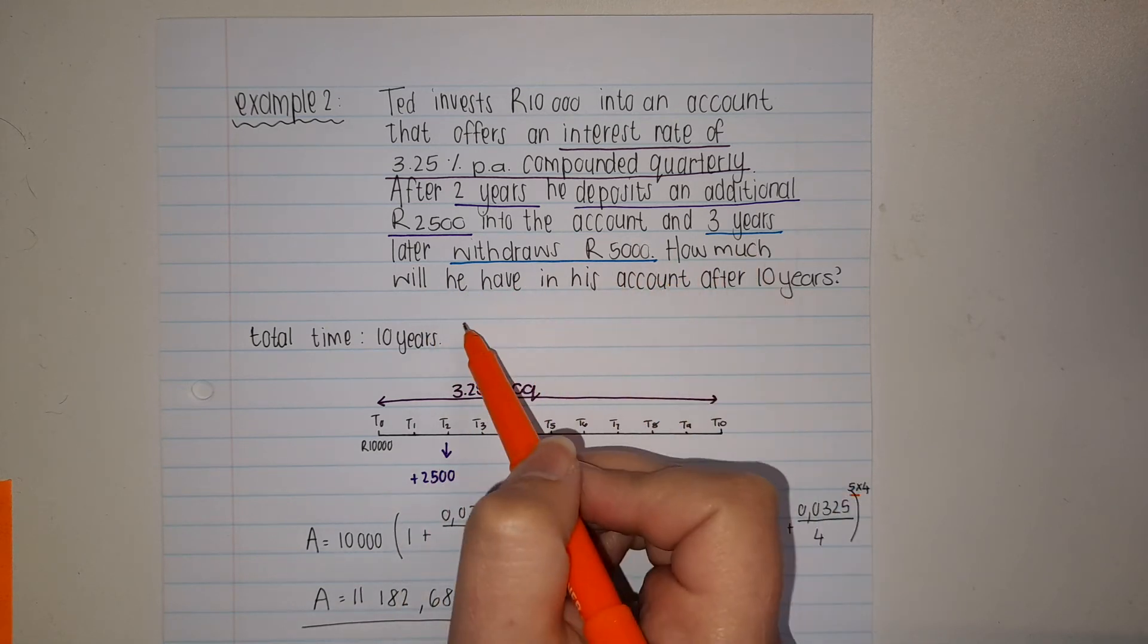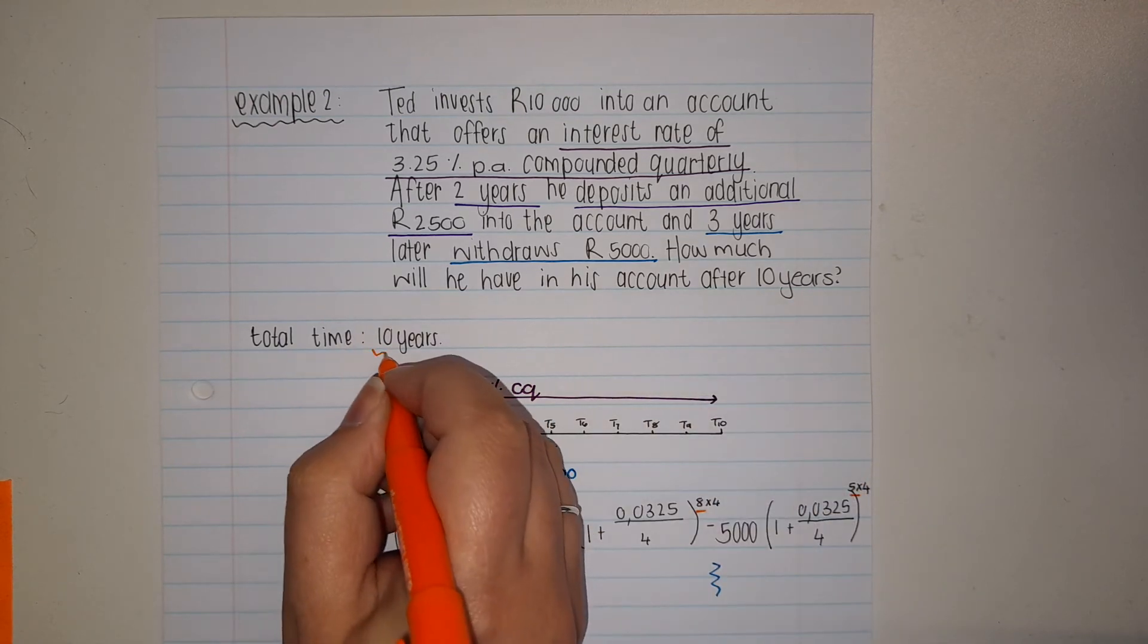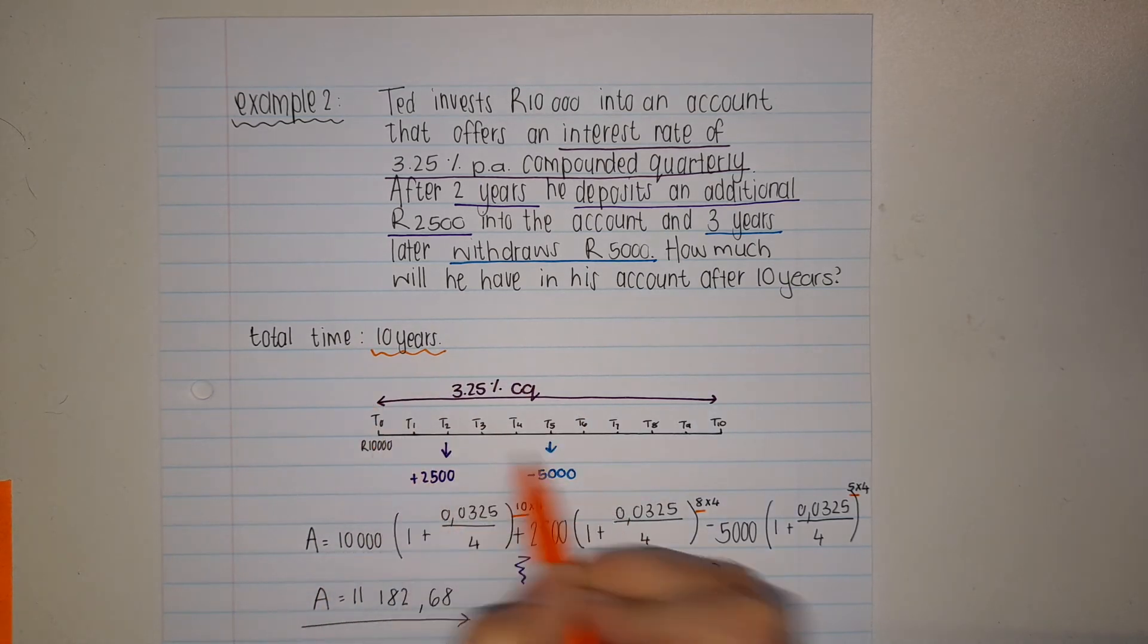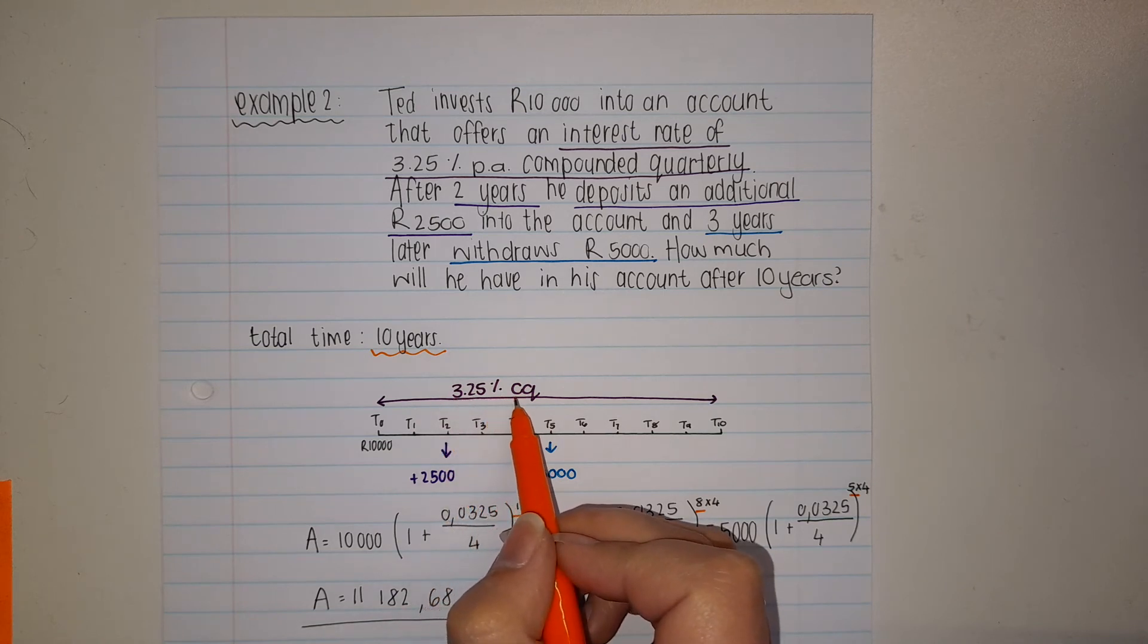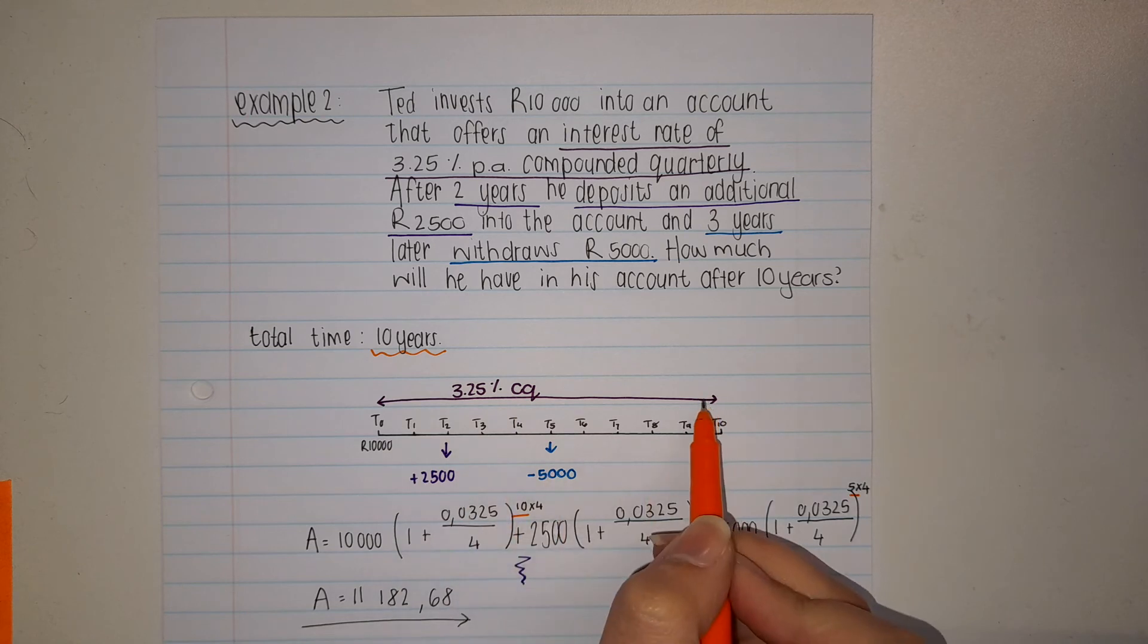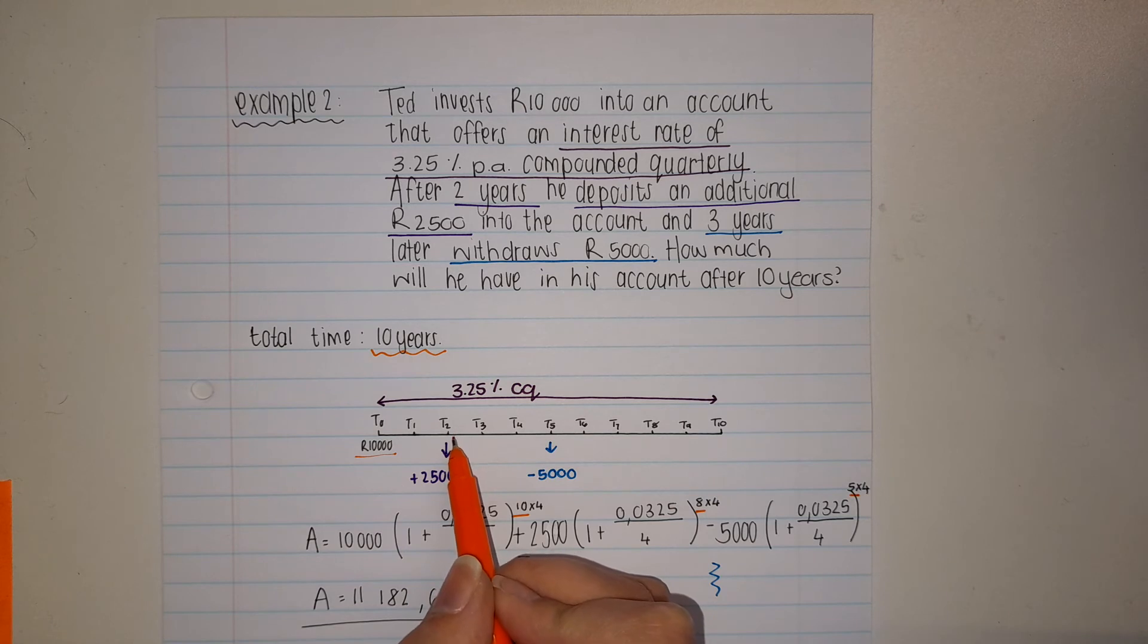How much will he have in his account after 10 years? We know our total time is 10 years, so I draw my timeline for 10 years. I know the interest rate stays the same: 3.25% compounded quarterly. I change nothing, but I started with 10,000 rand.